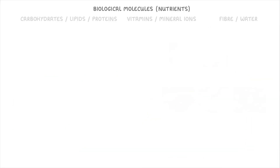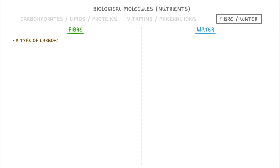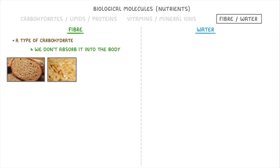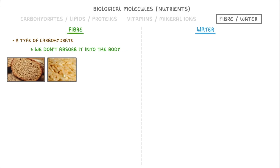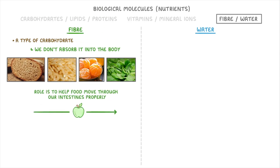Alright, the last things we need to look at are fibre and water. Fibre is actually a type of carbohydrate, but we normally think of it separately because we don't absorb it into the body at all. It's found in wholemeal foods like wholemeal bread and brown rice, as well as in fruits and vegetables, and its role is to help food move through our intestines properly — so it basically stops us from getting either diarrhoea or constipation.